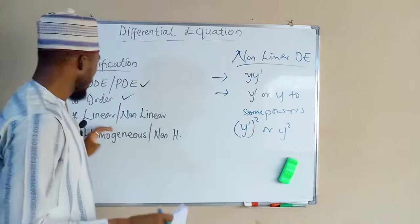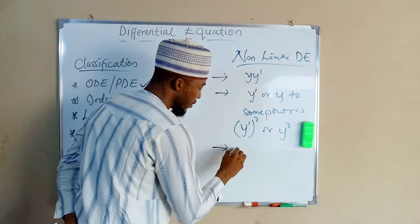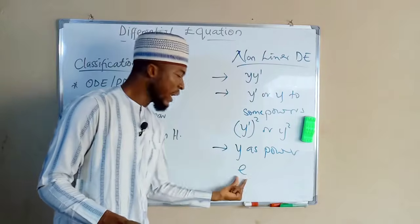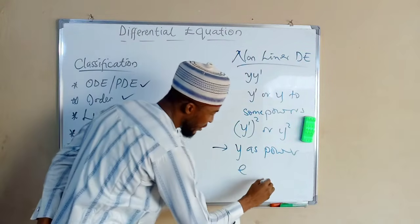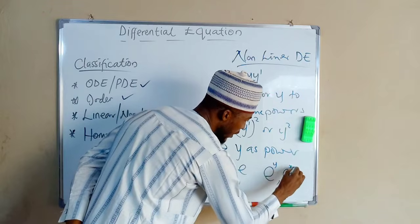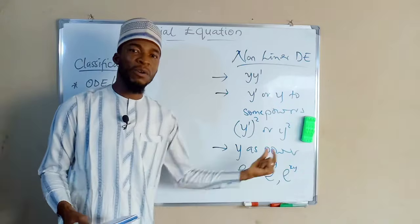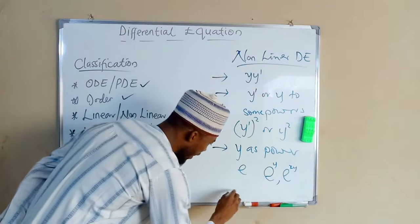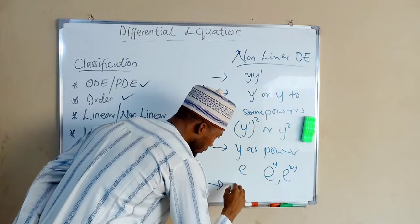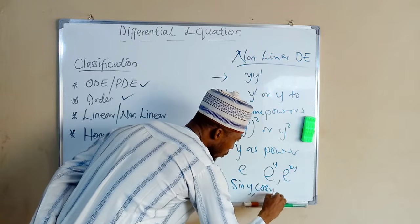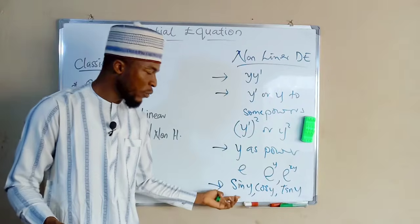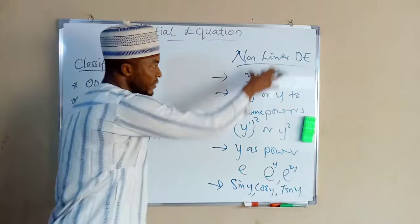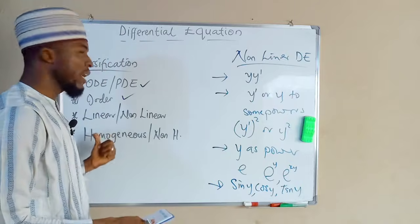Otherwise, we categorize it as a linear differential equation. In a linear differential equation, e cannot take a power of y. So in a non-linear equation you may see exponential y or exponential xy, whereas in a linear equation, the exponential can only take a power of x. Another characteristic of non-linear differential equations is that y can appear as the argument of a trig function, such as sin y, cos y, or tan y. In a linear differential equation you will never see sin y, cos y, or tan y.